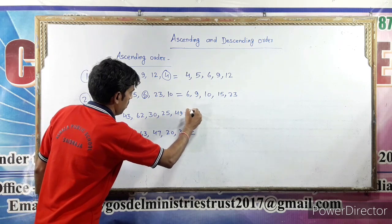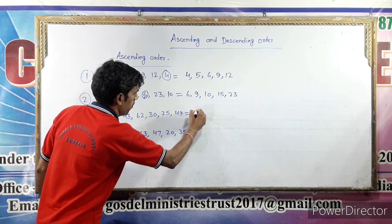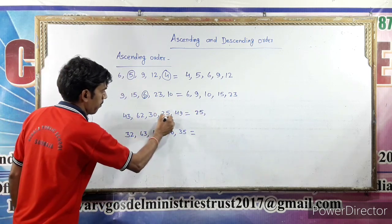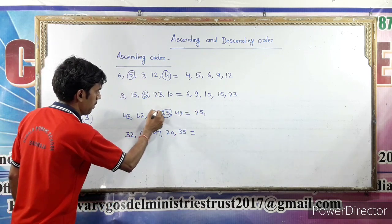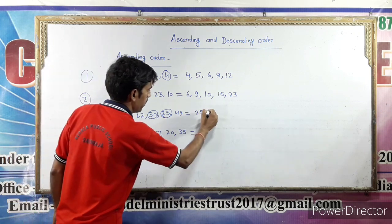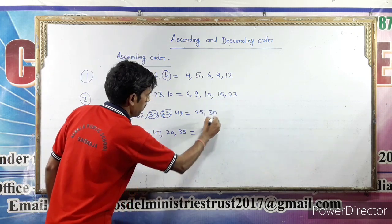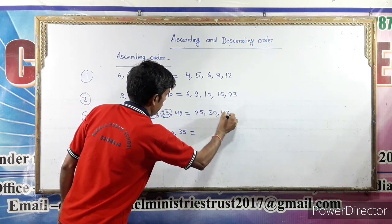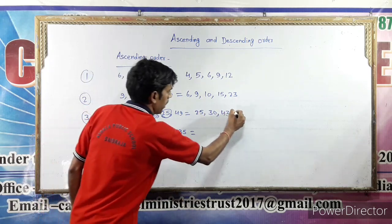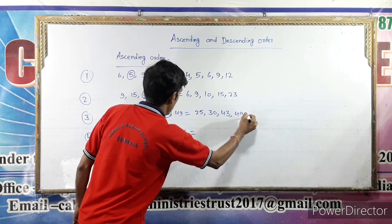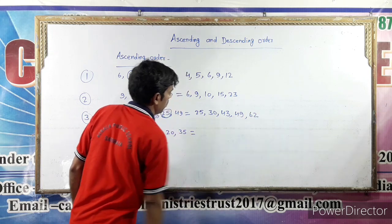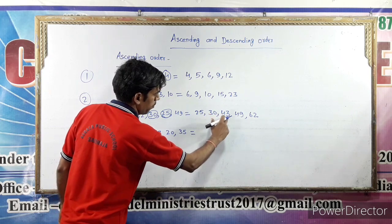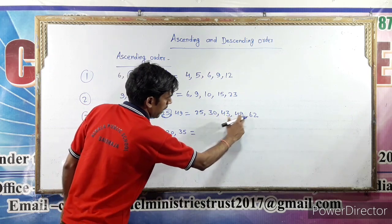Now the next example. The smallest number is 25. Next, the smallest remaining number is 30, then 43, 49 and 62. So ascending order: 25, 30, 43, 49 and 62.